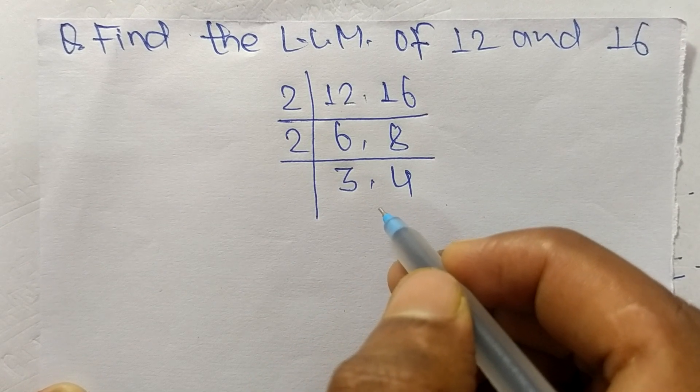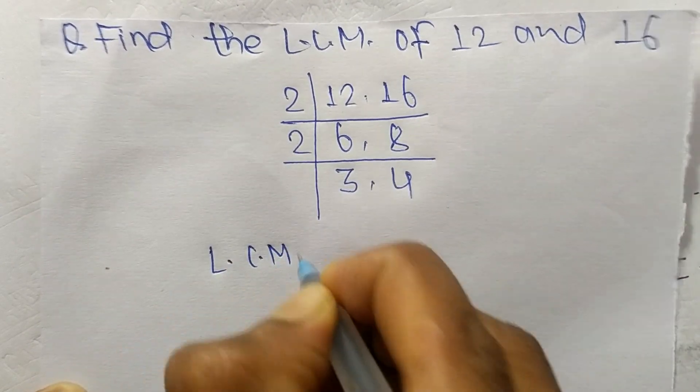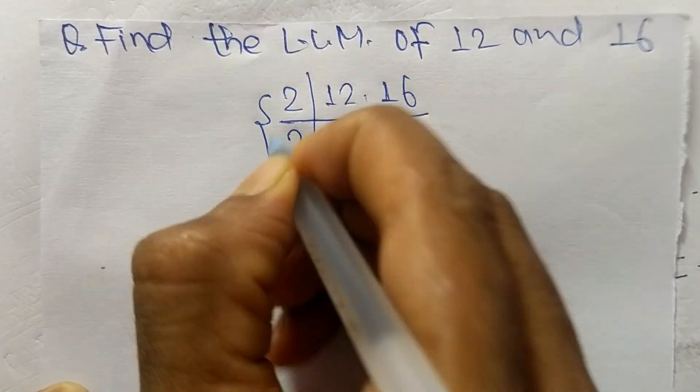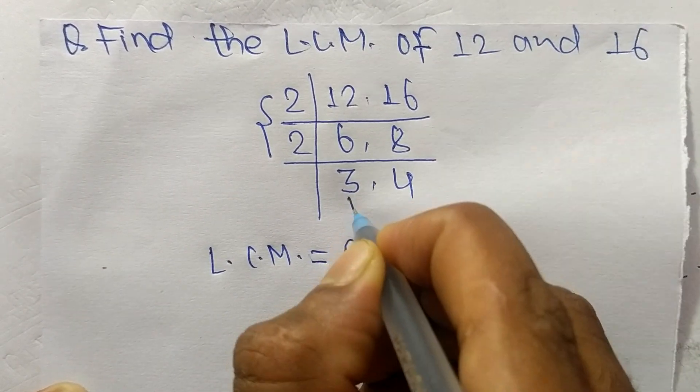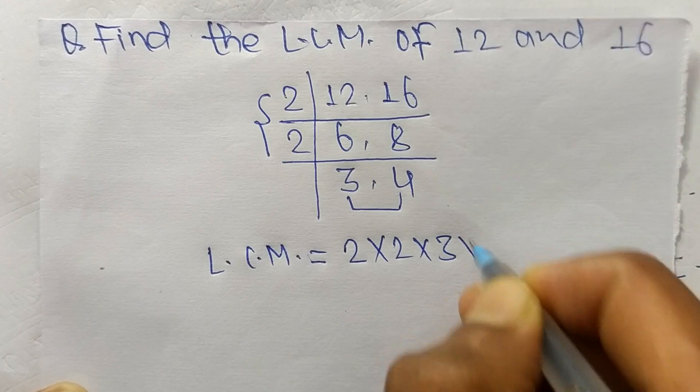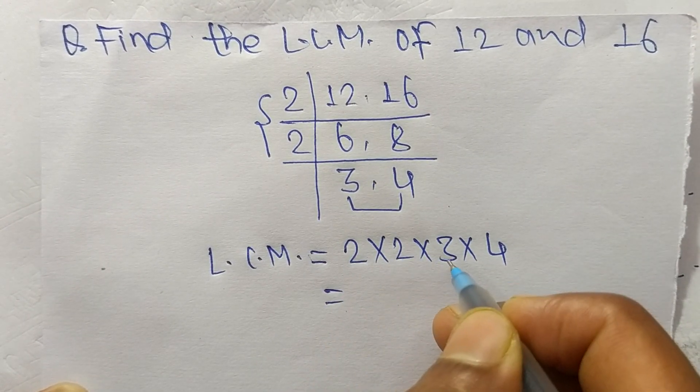So its LCM is equal to, from this part, 2 times 2, and from this part, 3 times 4. So 2 times 2 means 4, 4 times 3 means 12.